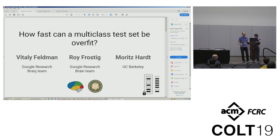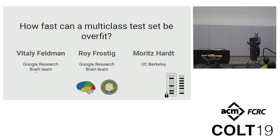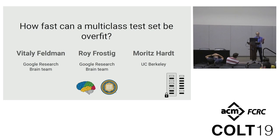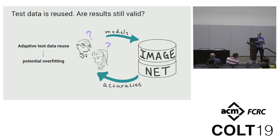Next up we have Vitaly Feldman. This open problem will look very familiar — it's based on a joint work with Roy Frosting and Moritz Harden, and is exactly the problem that Moritz talked about at the end of his talk. Let me briefly recap: we're trying to understand overfitting to the test set in multi-class prediction problems. More formally, we're looking at a setting in which users are evaluating the accuracy of their models on some test set or benchmark. We know that if you use the test set for the first time, you'll get an unbiased estimate of the model's true accuracy on the population.